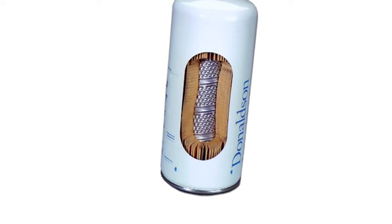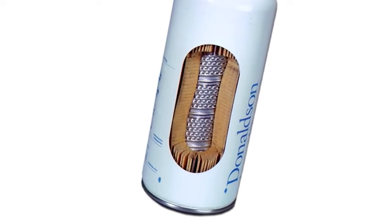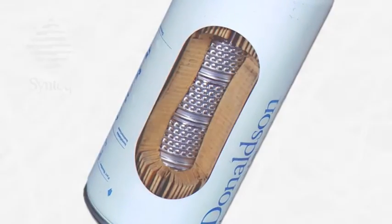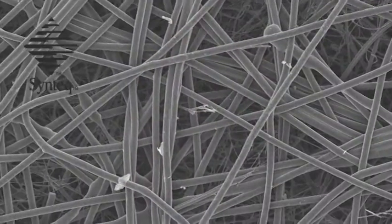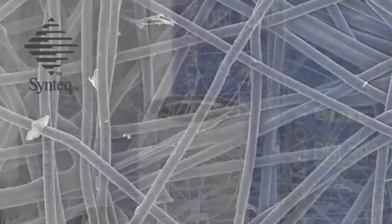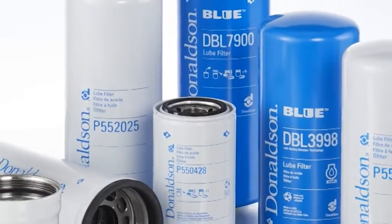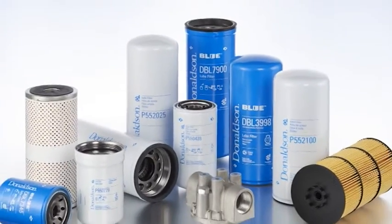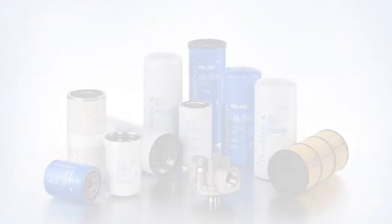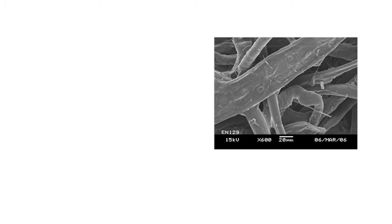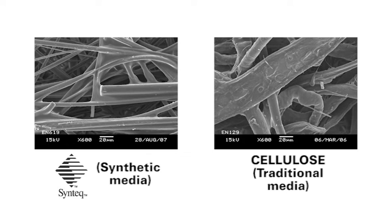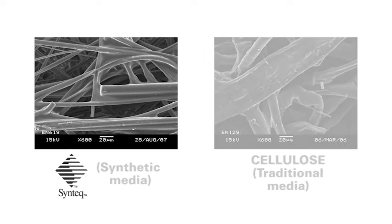There are basically two types of media used in Donaldson filters. Cellulose, a media family made from wood fibers, and Syntec. Syntec is a synthetic media that bears the Donaldson registered trademark. When an application requires higher efficiency filtration than cellulose filter media can deliver, Donaldson uses Syntec. Note in this comparison of cellulose and Syntec how much finer the synthetic fibers are, making the capture of smaller particles possible.